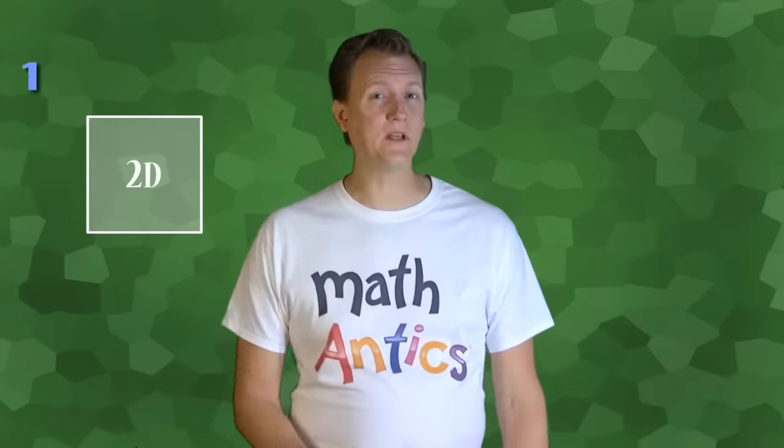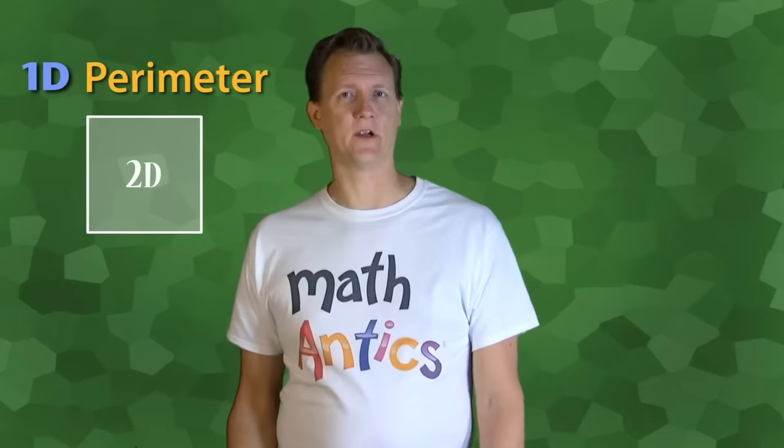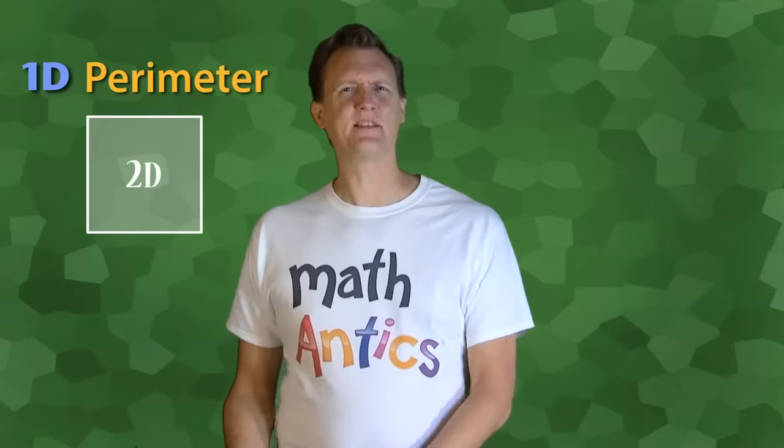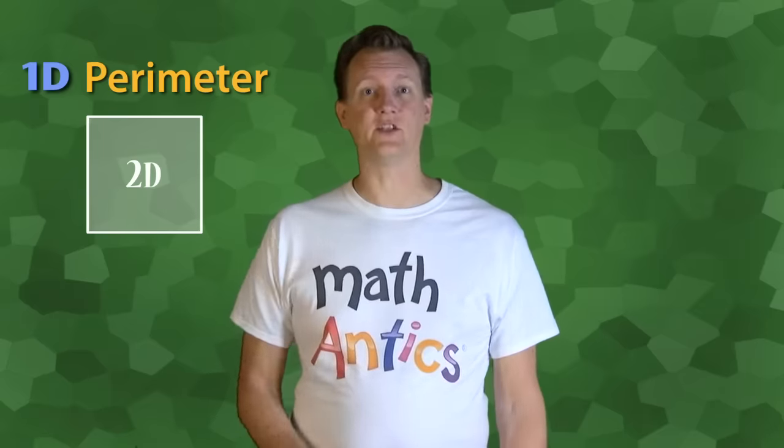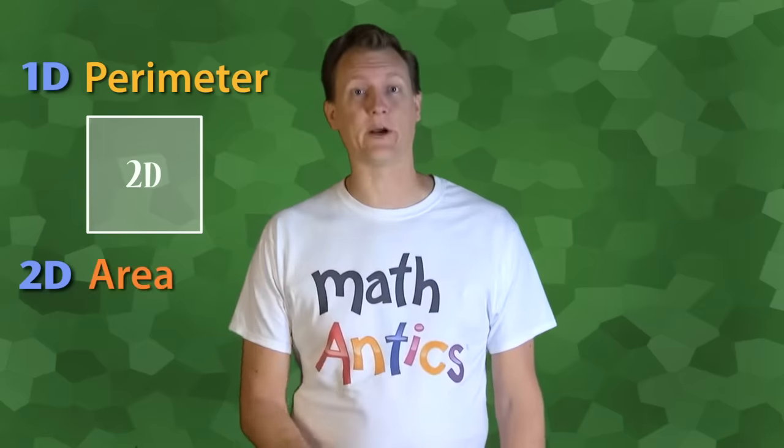Welcome to Math Antics. In our last geometry video, we learned that all two-dimensional shapes have a one-dimensional quantity called perimeter, which is basically the outline of the shape. In this video, we're going to learn that these shapes also have a two-dimensional quantity called area.